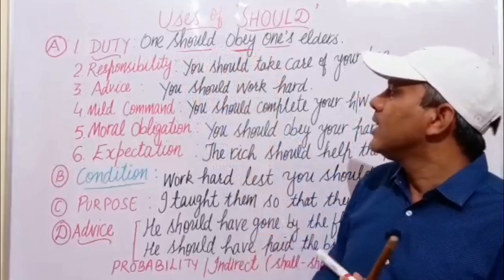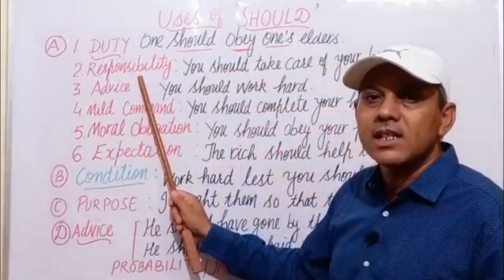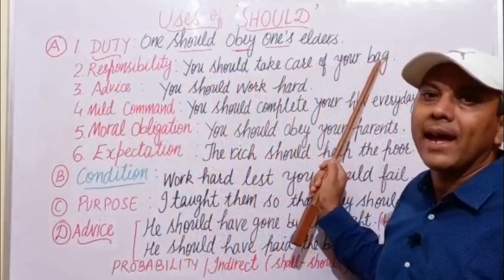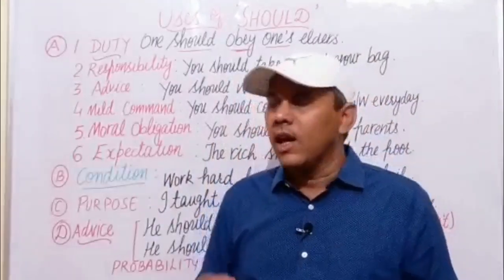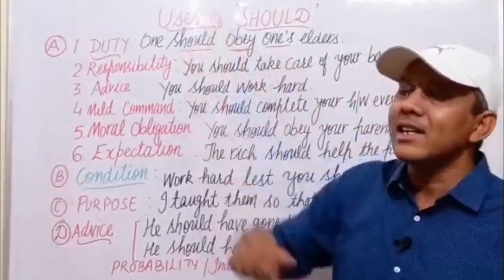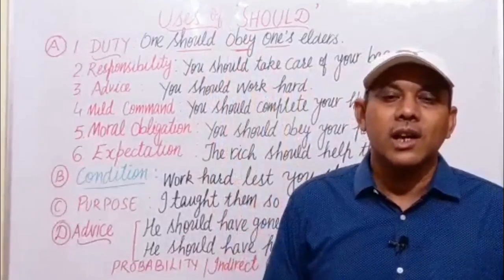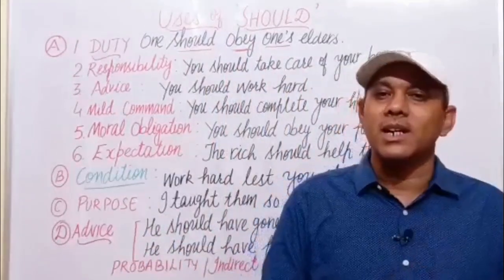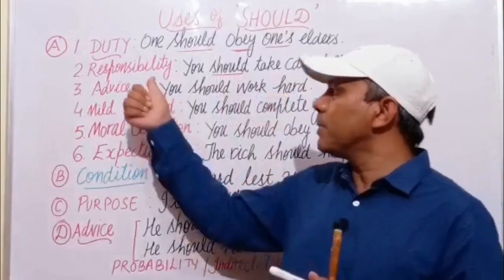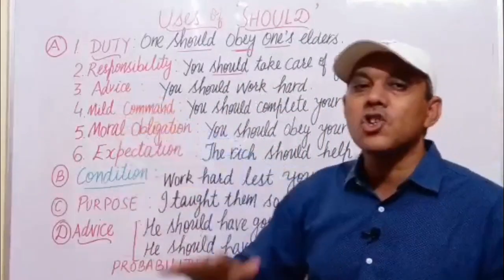The modal verb should is used before the main verb 'obey' to express duty. Next, we use should to express responsibility. For example: you should take care of your bag. Suppose we are traveling by bus or train — there is a line written: you should take care of your luggage. Nobody else is responsible; you are responsible. So we use should to express responsibility.